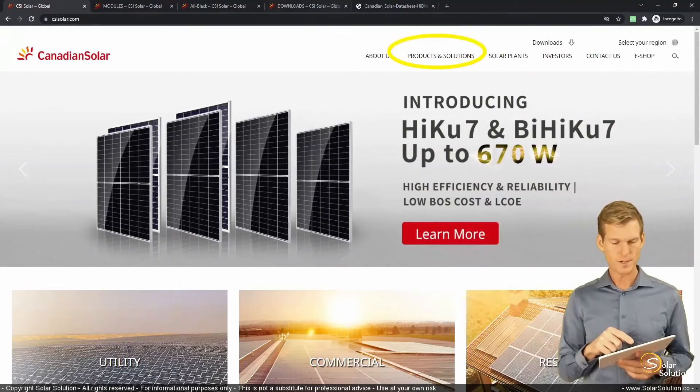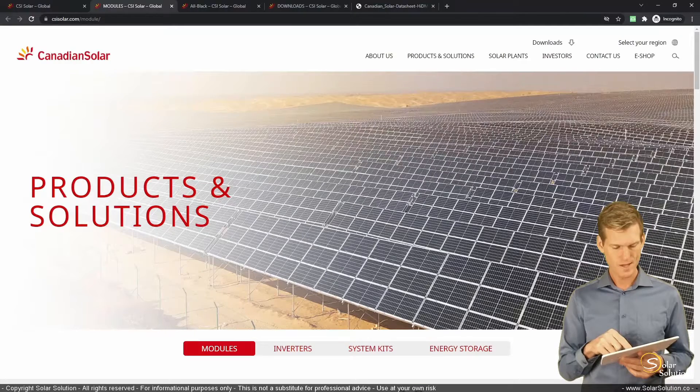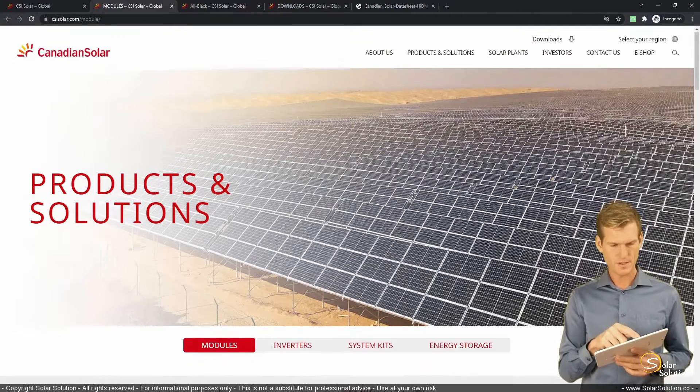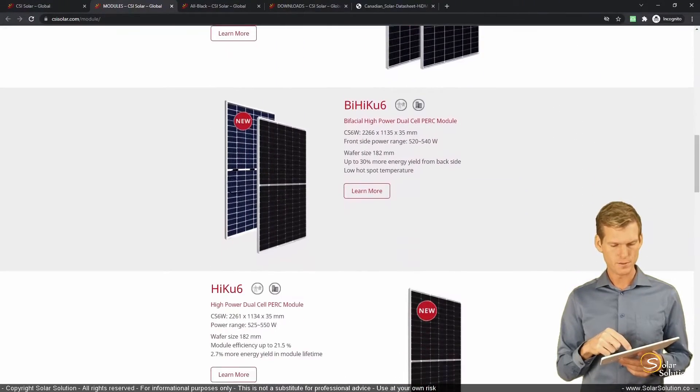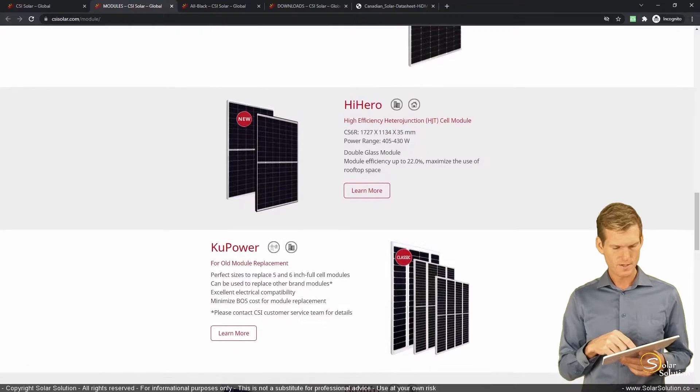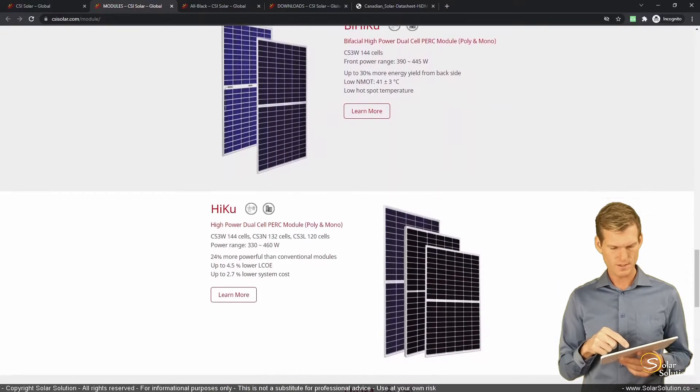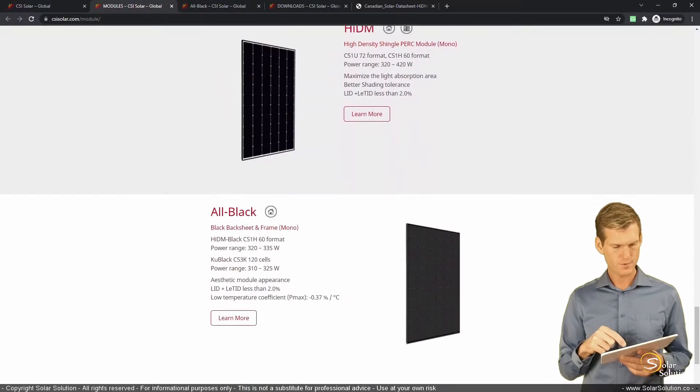Let's go to their products and solutions sections and select modules, and then it doesn't really matter which one. Let's assume we're going for an all black photovoltaic module, a 60 cell. So let's scroll down, here we are, 60 cell, all black.